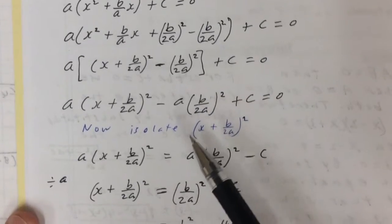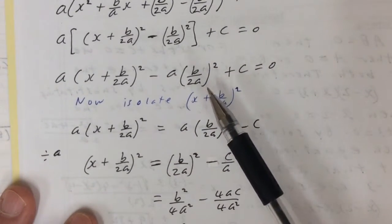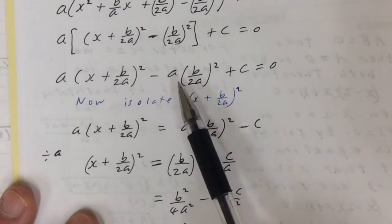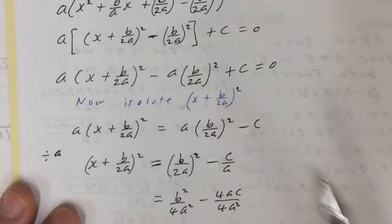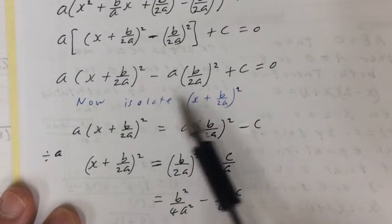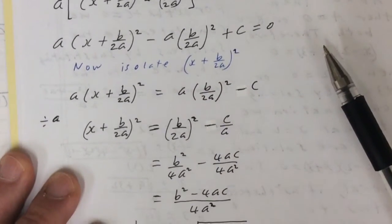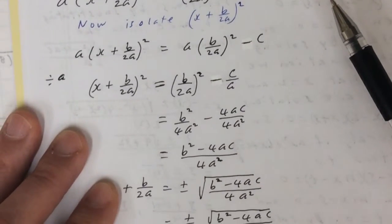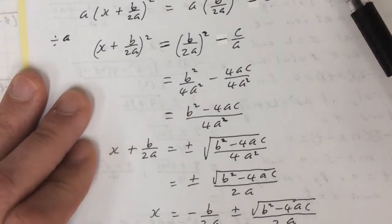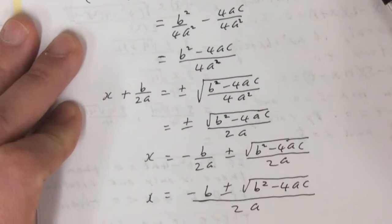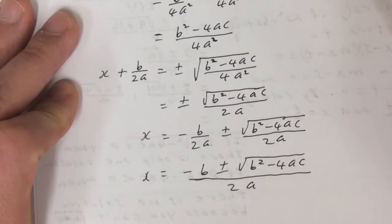By doing a lot of simplifying here, I'll let you read through it, you can get the quadratic formula. So following the completing the square method for solving quadratic equations, this gets you the quadratic formula.